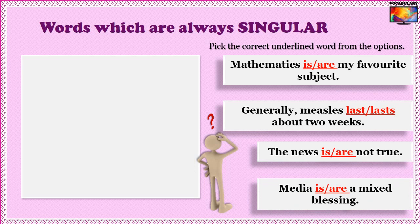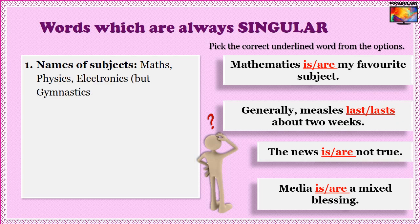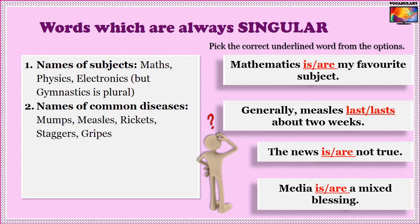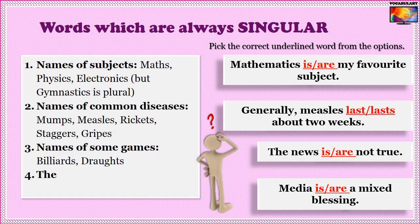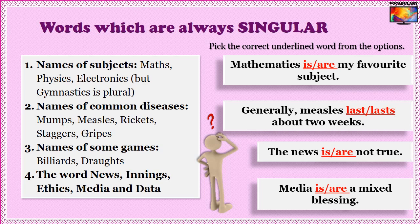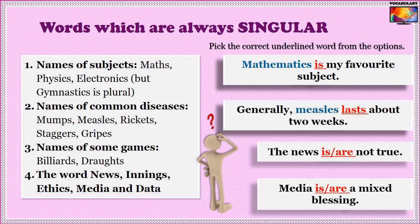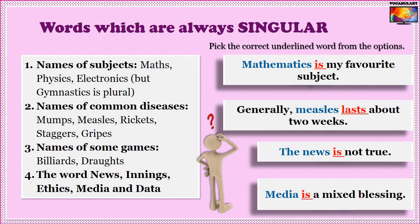Here are some other tricky cases — nouns that look like they are plural but are always used as singular. Names of subjects such as 'maths,' 'physics,' 'electronics' (but 'gymnastics' is plural). Names of common diseases such as 'mumps,' 'measles,' 'rickets,' 'staggers,' 'gripes.' Names of some games such as 'billiards' and 'drafts.' And also the words 'news,' 'innings,' 'ethics,' 'media,' and 'data' are all singular. Correct answers: 'Mathematics is my favourite subject,' 'Measles lasts about two weeks,' 'The news is not true,' 'Media is a mixed blessing.'